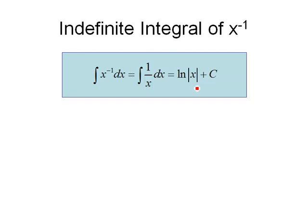The absolute value needs to be in there because we have issues with the domain of a logarithm function and the domain of the function 1 over x. Remember, logarithms only take in positive numbers, but 1 over x can take in any number except 0.